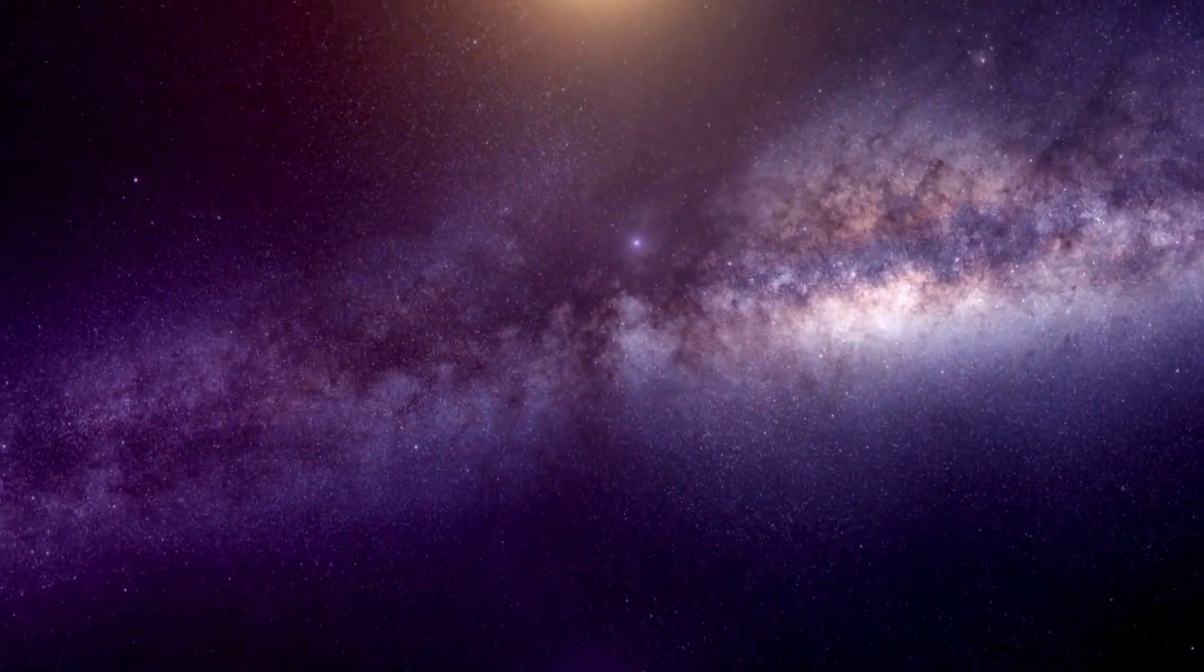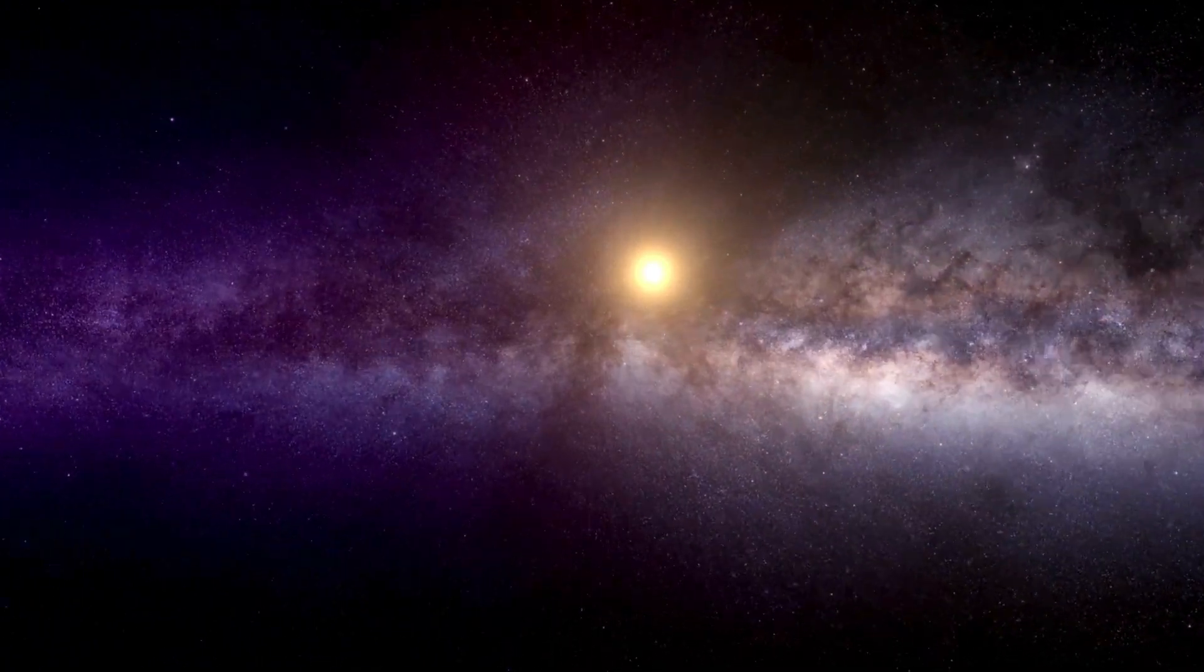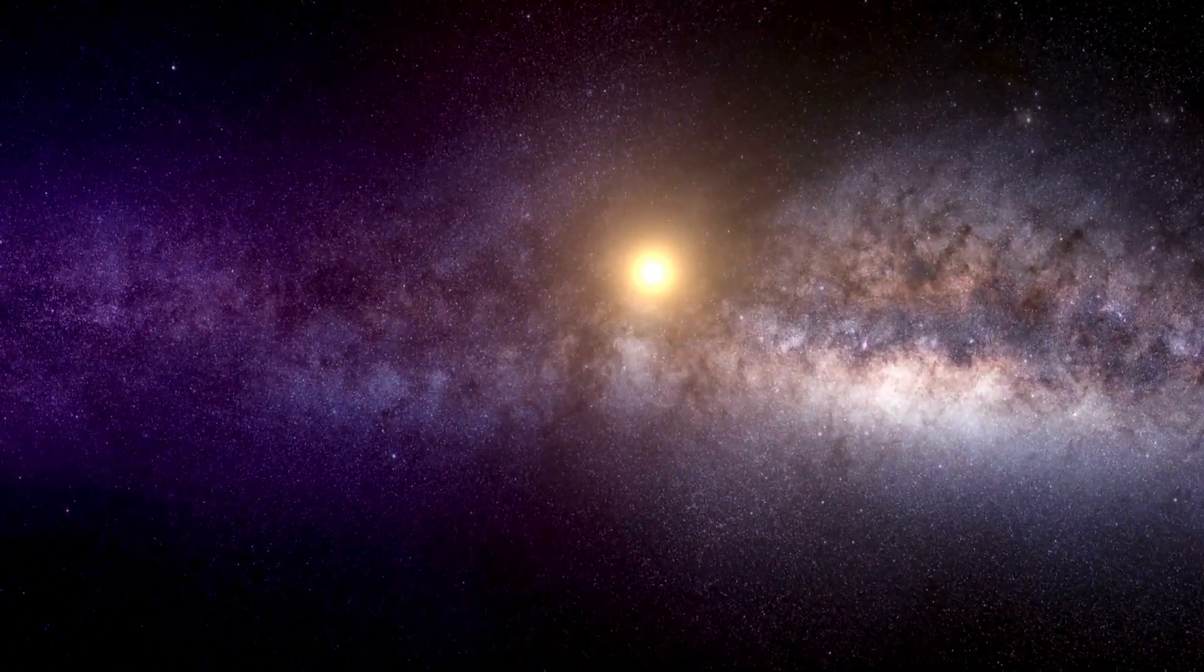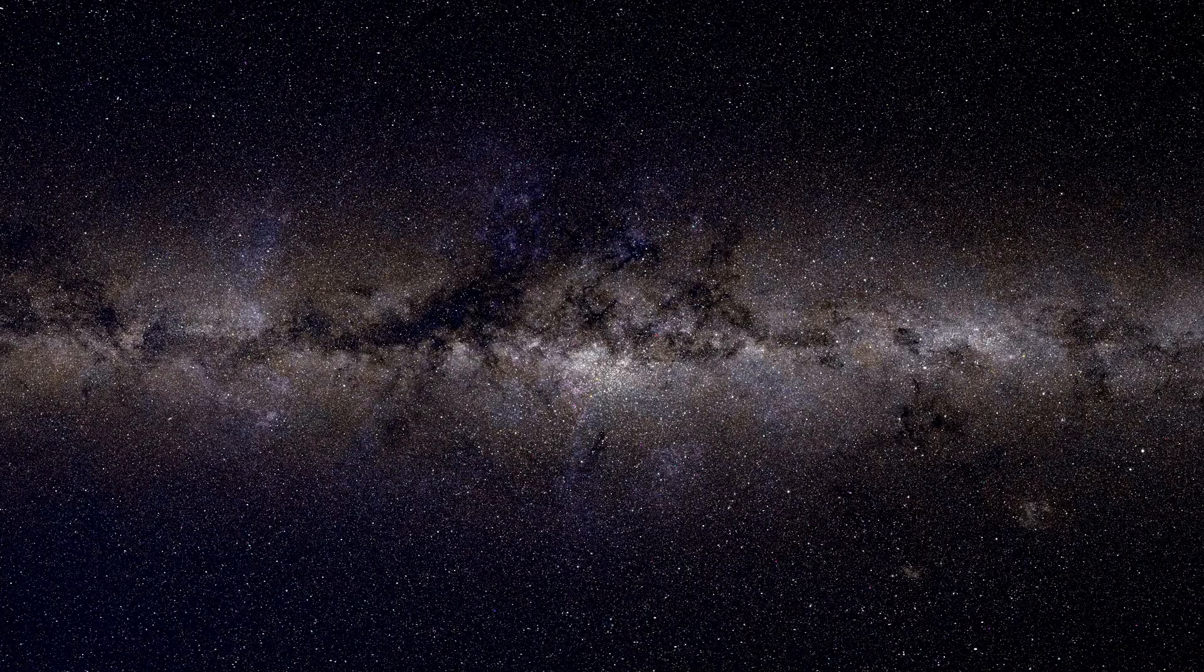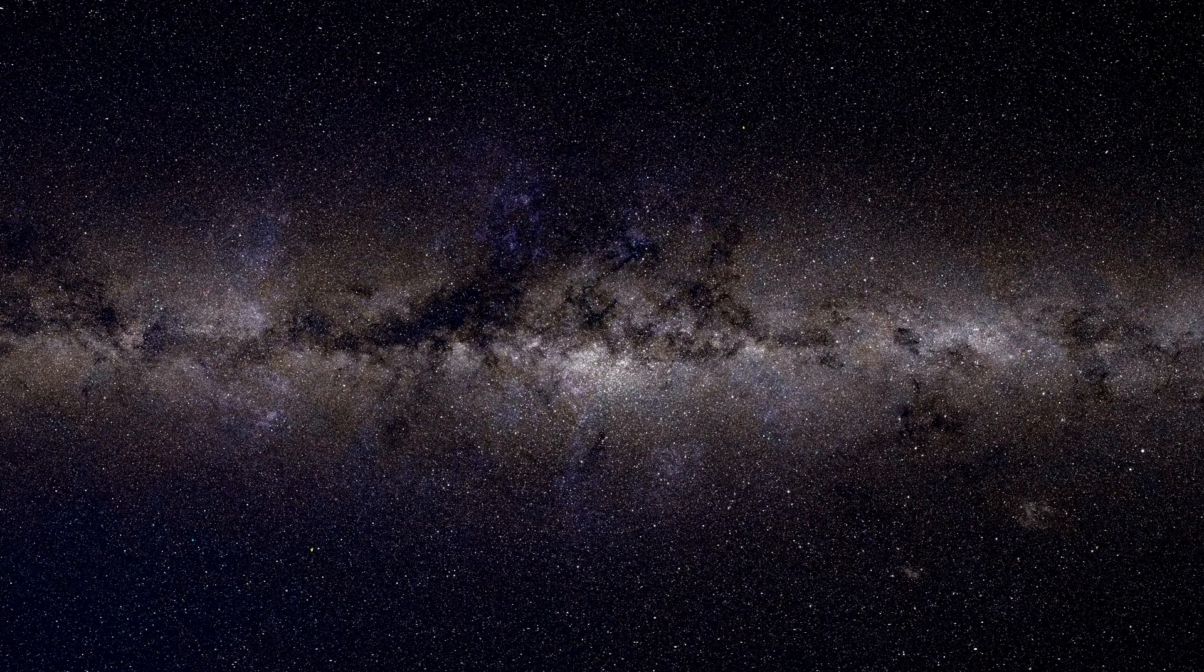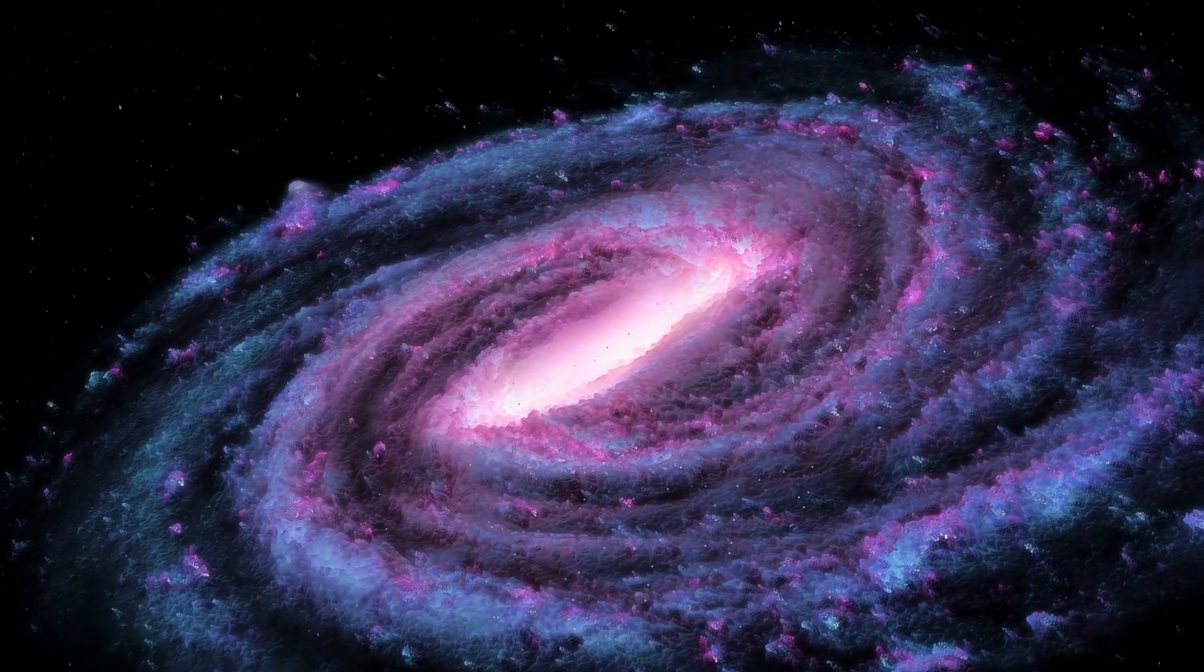As for Proxima b, its mass is estimated to be about 1.7 times that of Earth. Remarkably, it completes an orbit around its star in only 11.2 days compared to our Earth year of 365.25 days. This gives us an estimate of the size of the star orbiting Proxima b.